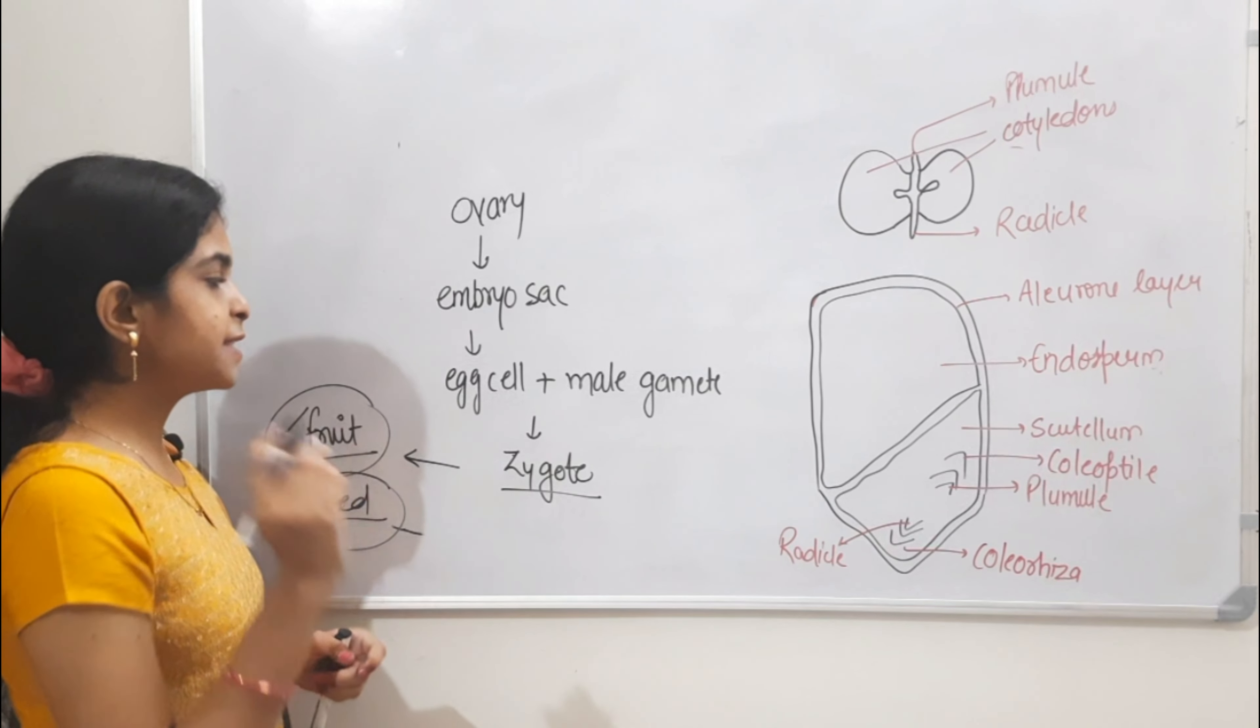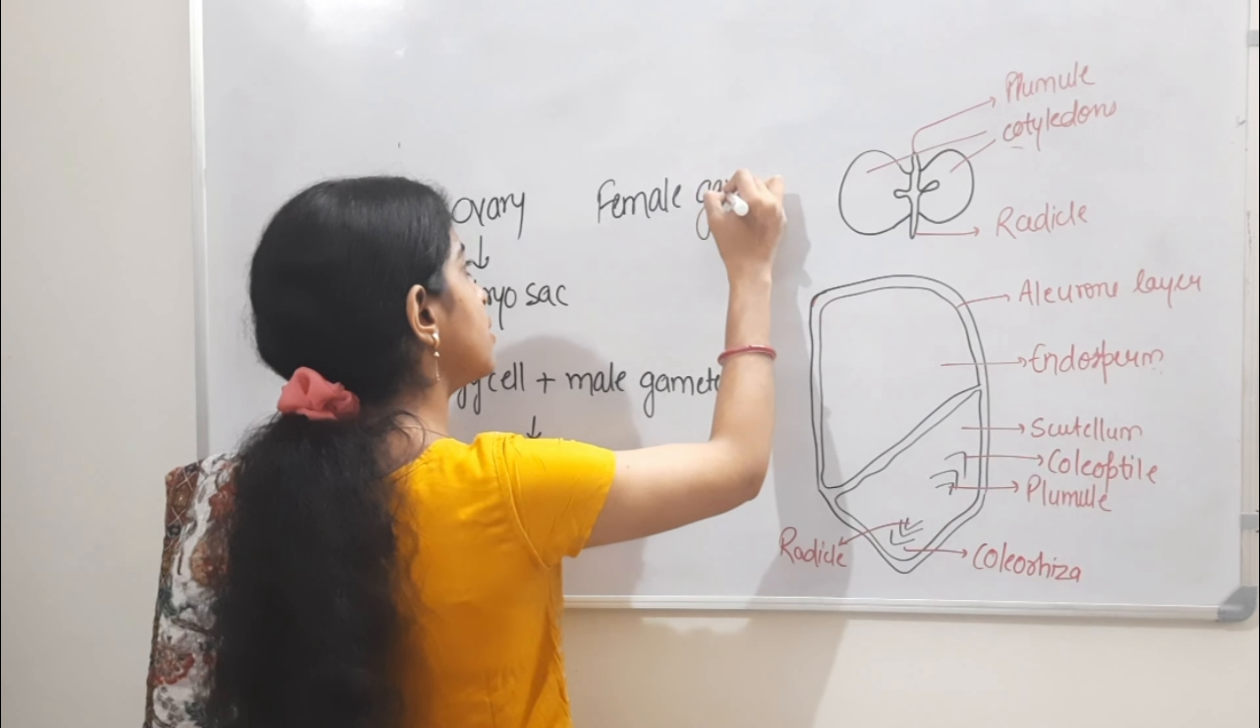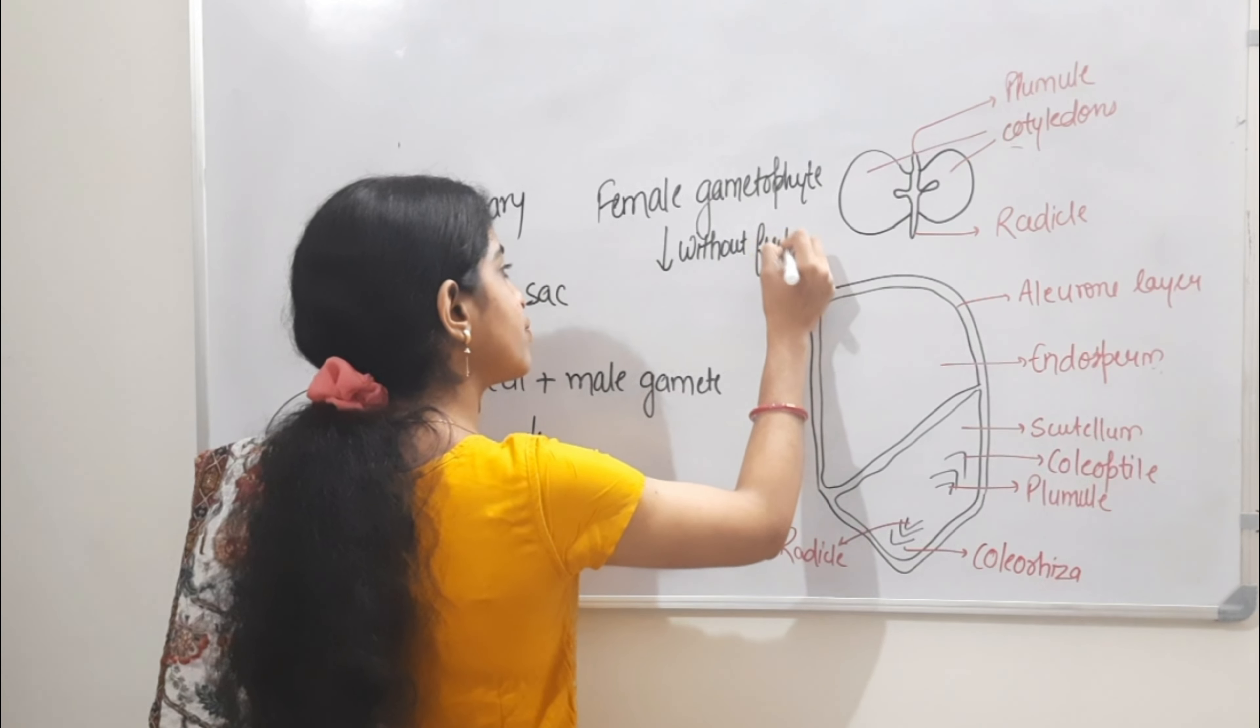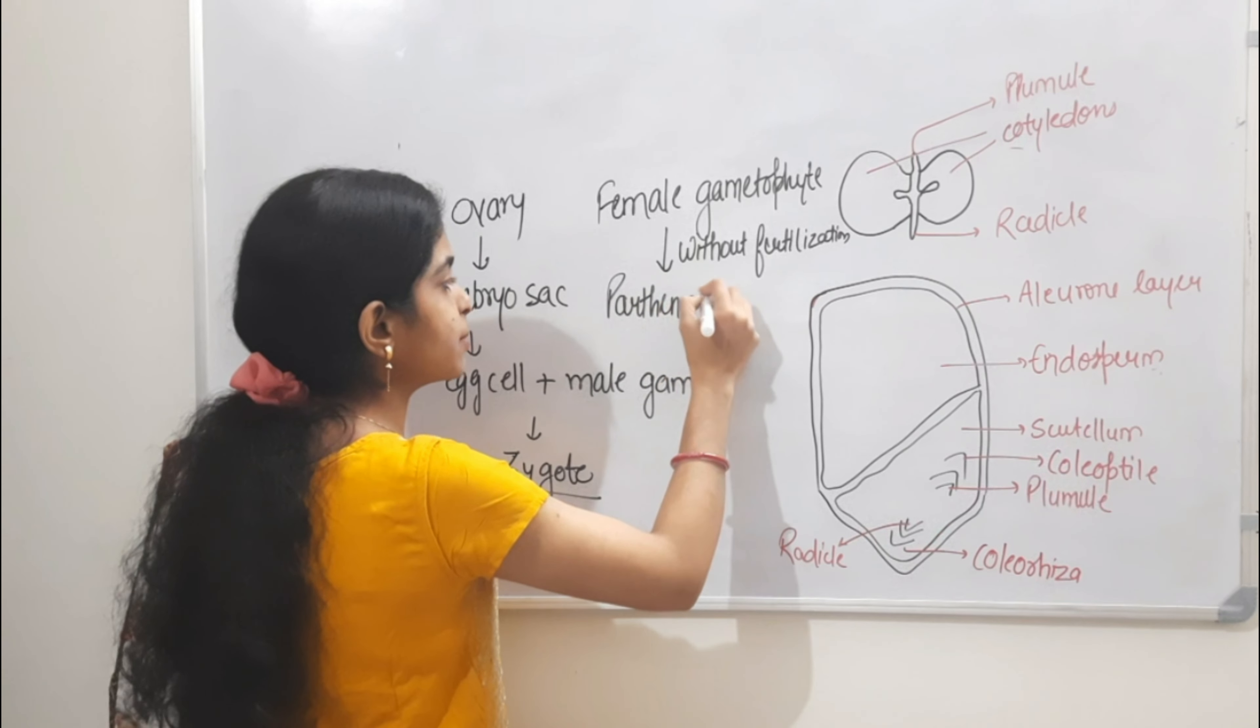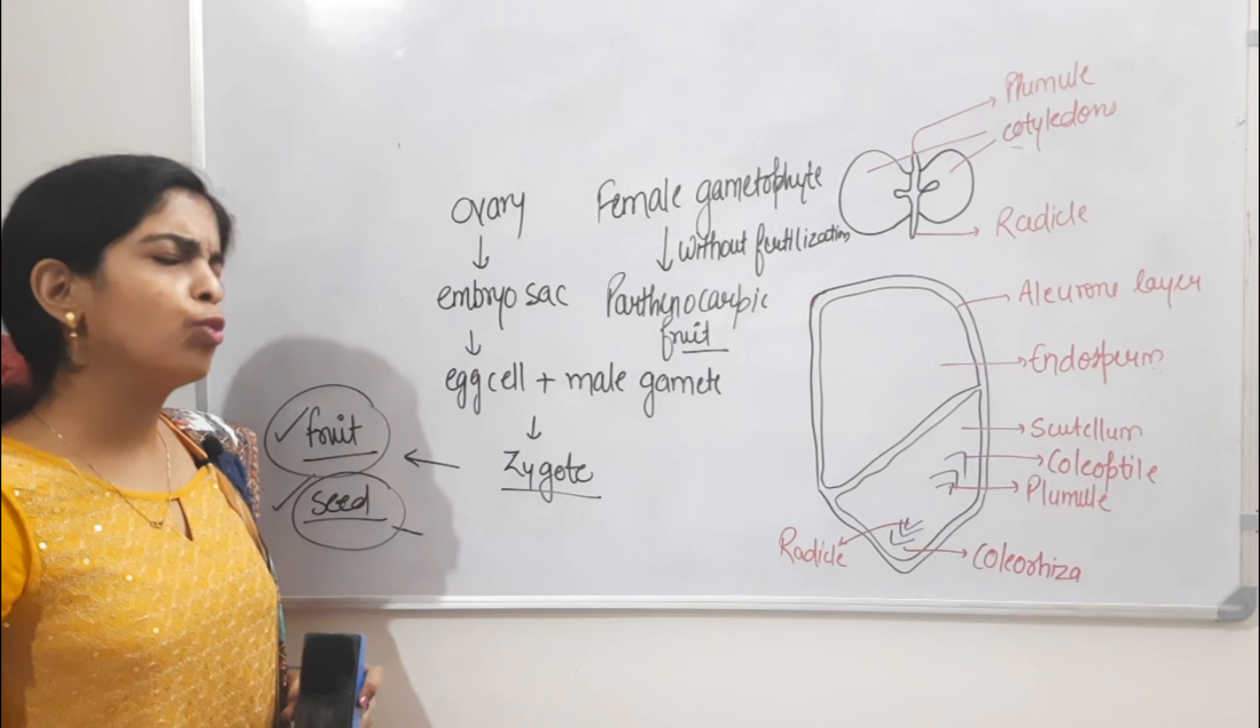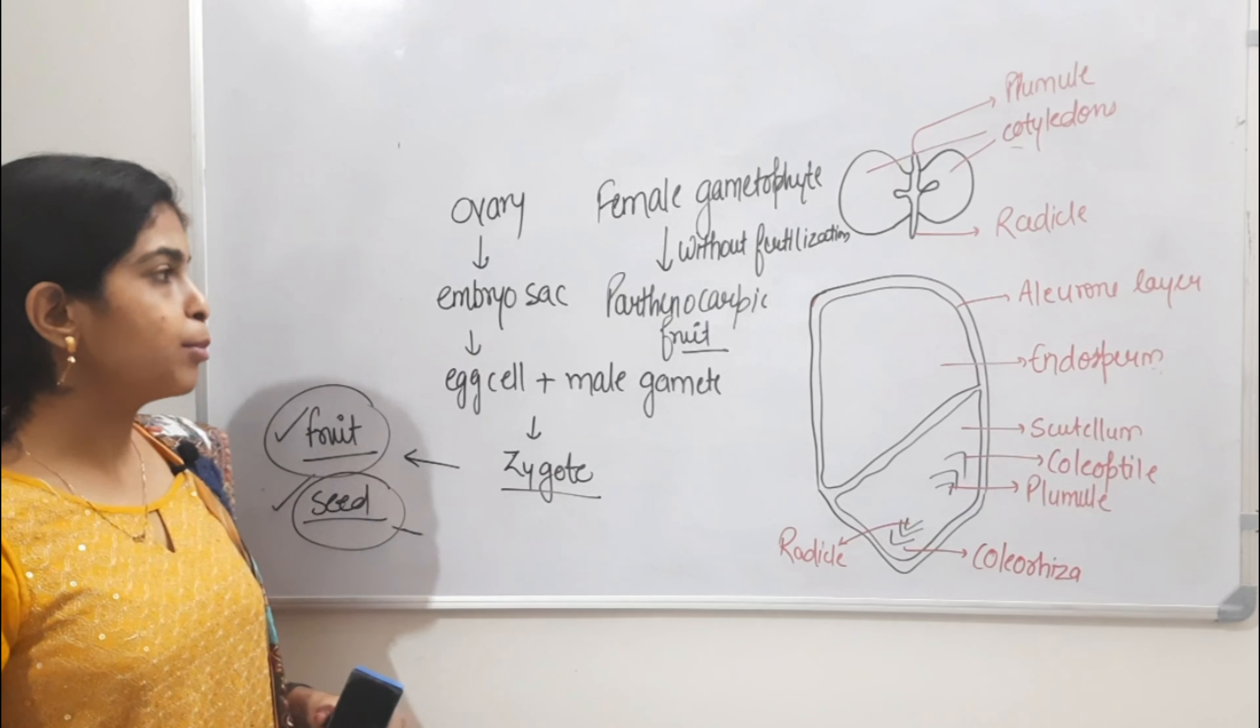Fruit without fertilization - female gametophyte means gynosium. Without fertilization in female gametophyte, the fruit produced is called parthenocarpic fruit. Examples are banana and some other fruits. Without fertilization, we call it parthenocarpic fruit.